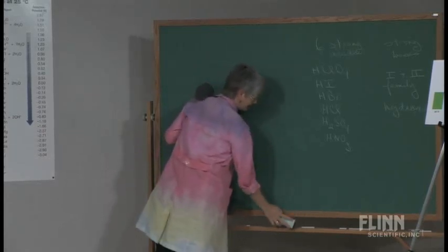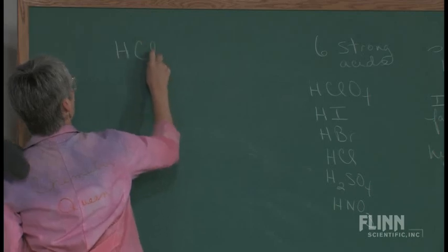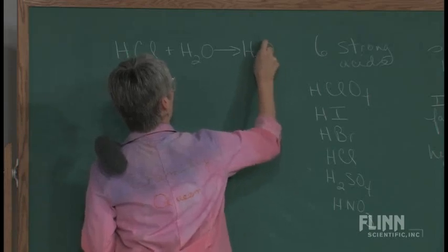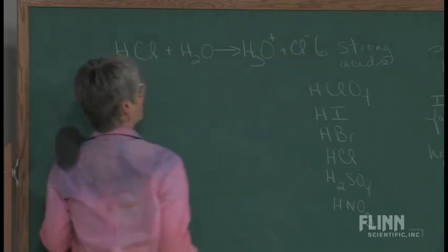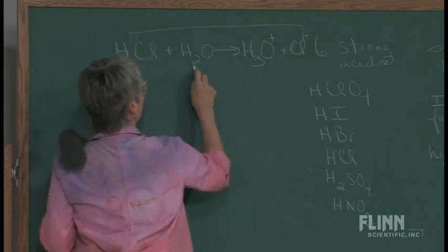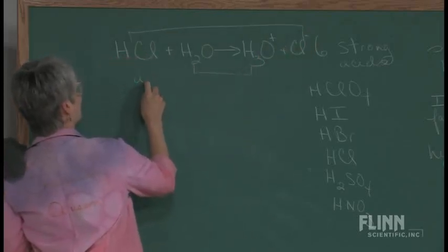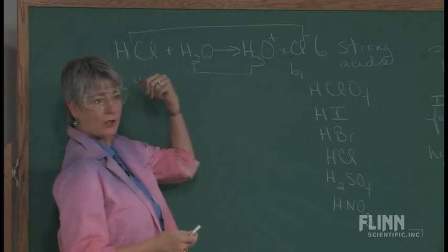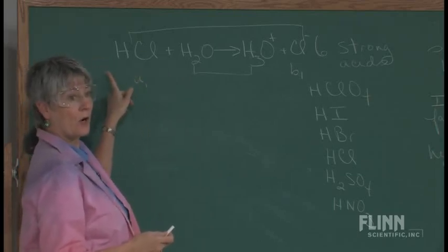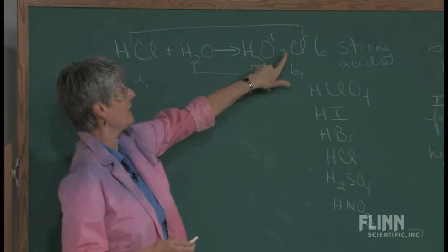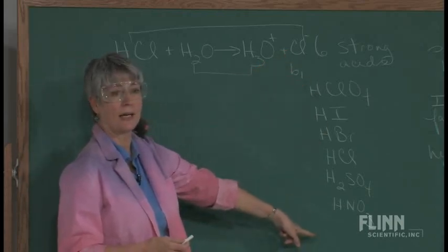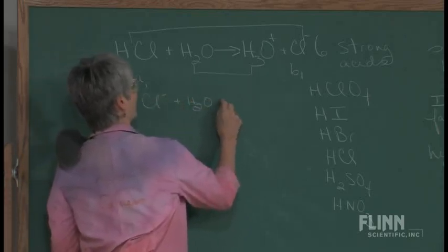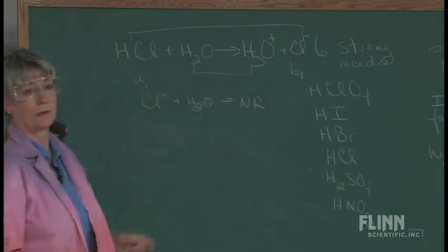What we've got with our strong acid, when we put it in water, it completely ionizes. So we've got, if we use Bronsted-Lowry theory, we have conjugate acid-base pairs. This is the acid. This is its conjugate base. That reaction in the reverse direction tends not to happen because HCl is a strong proton donor. So the ion that comes from any of your strong acids doesn't react with water. You put the chloride ion in water and you're going to get no reaction.